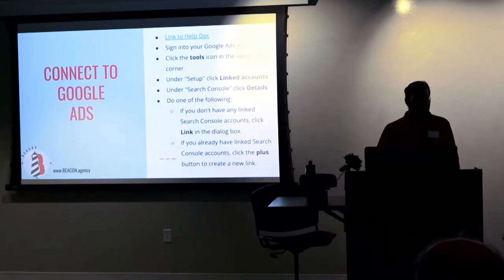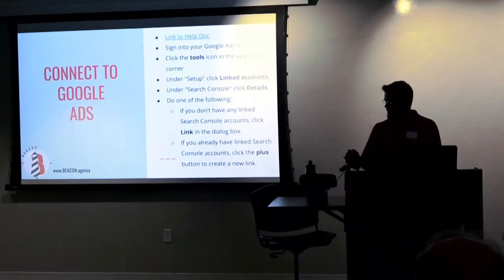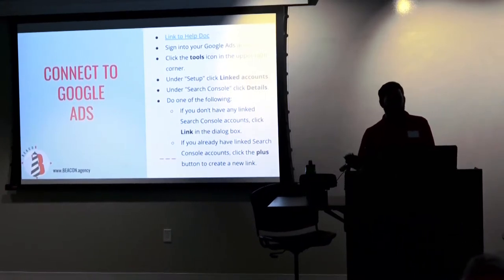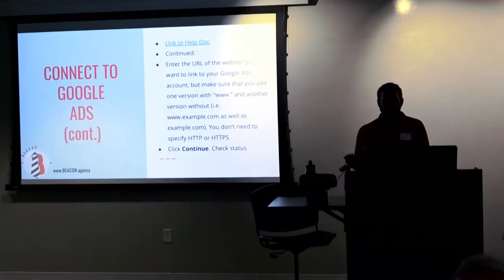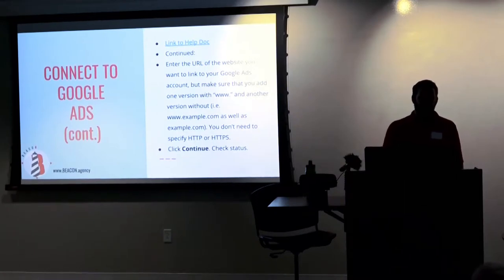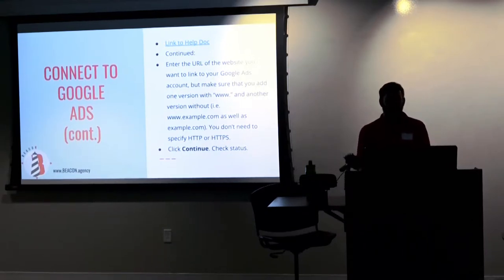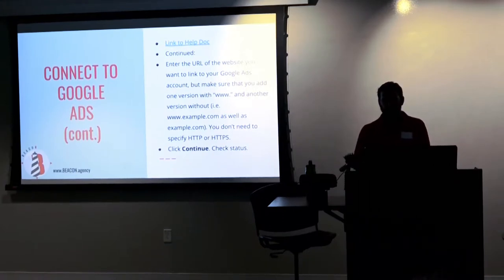Another thing you might want to connect it to is Google Ads. Go into your ad account, click the Tools icon — the little wrench at the top. Under Setup, go to Linked Accounts, and you'll see a tile for Search Console. Click Details, then click through to connect from there. If you don't have any linked console accounts, click Link in that dialog box; if you do, click the Plus button to add one. Add the URL of the website you want to link, add one version with www and one without, then click Continue.